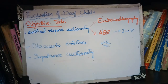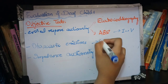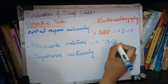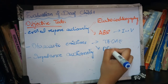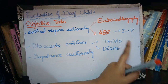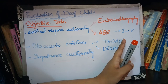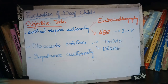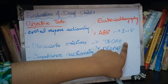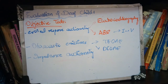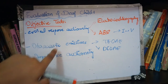Another test is otoacoustic emissions, which is also a screening test. There are two types: transient evoked otoacoustic emissions (TEOAE) and distortion product otoacoustic emissions (DPOAE). The main difference is that transient evoked OAE detects hearing loss up to 30 decibels, while DPOAE detects up to 50 decibels. There is also a frequency difference — transient is frequency-specific, while DPOAE covers a band of frequencies.